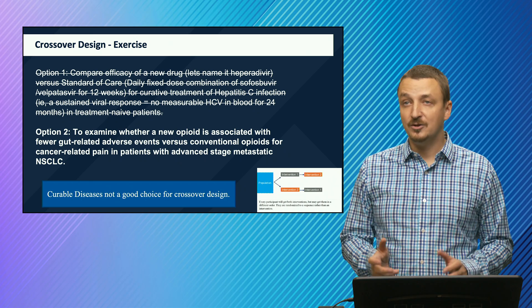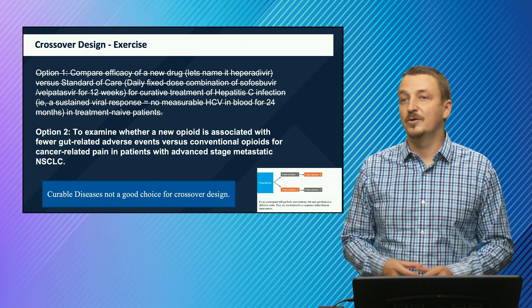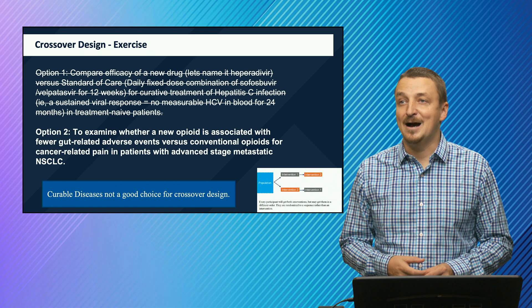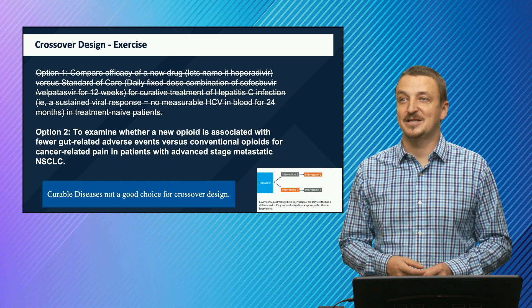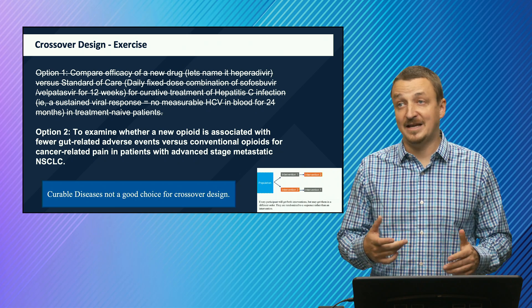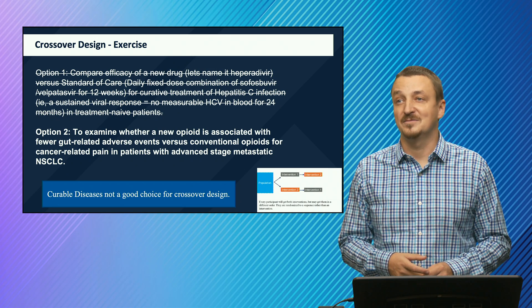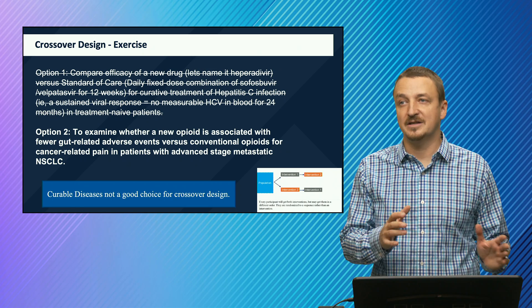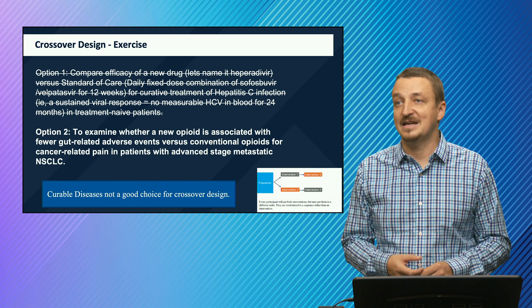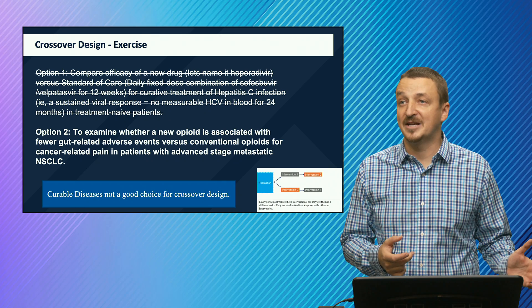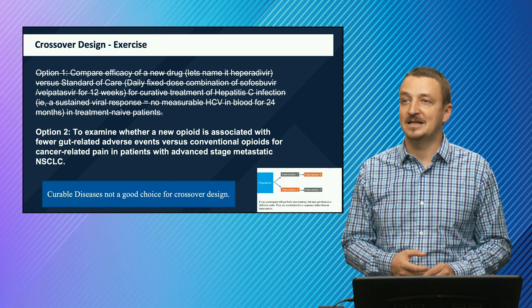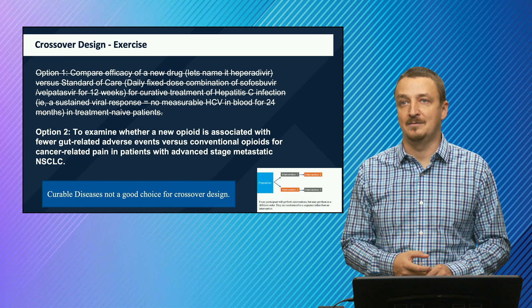Why is option one not a good choice for a crossover design? First of all, it is a curable disease. As a curable disease, this would be a big problem because with new HCV treatments, there is cure in above 90% of cases. People would be cured after receiving the first intervention and would not even be able to receive the second intervention. That is why option one is a no-go for a crossover design. Thank you.